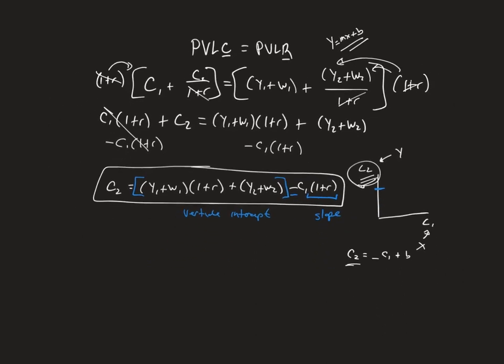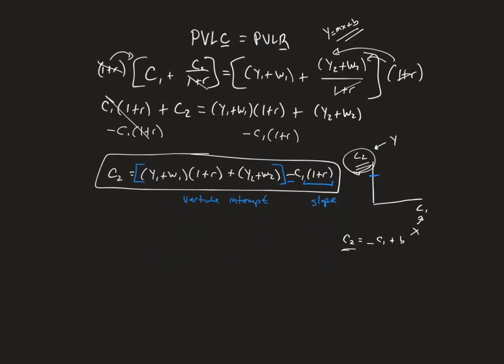So what this tells us is my y-intercept, meaning the place that it's going to, up here cross that vertical line, is going to be y1 plus w1 times 1 plus r plus y2 plus w2. So that's always going to be that way in our two-period model. And then our slope is going to be equal to negative 1 plus r.